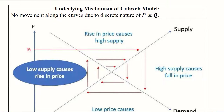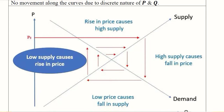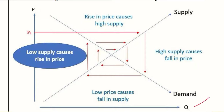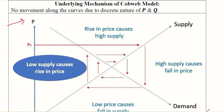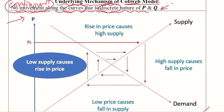Before discussing specific cases, we need to understand how a discrete function behaves in this diagram. The diagram has Q on the x-axis and price on the y-axis, similar to our usual static analysis. One important point is that there is no movement along the curves due to the discrete nature of p and q. Movement along the curve does not happen because this is not a continuous case — we are using difference equations for discrete variables.